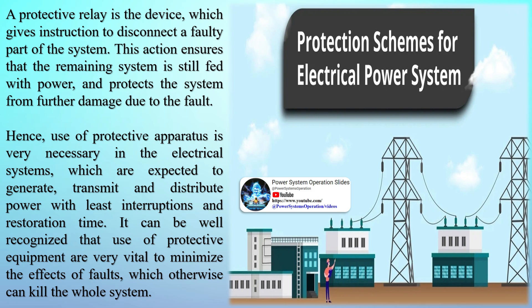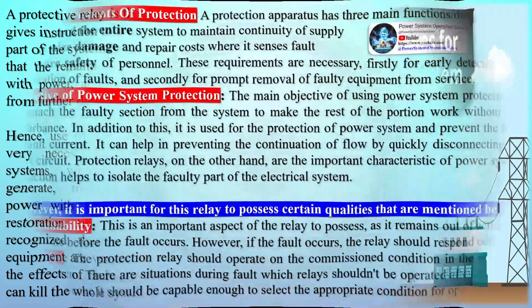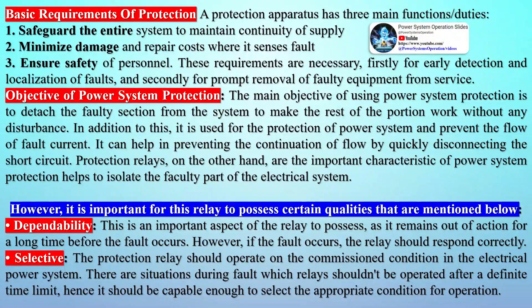It is important for the relay to possess certain qualities. Dependability is an important aspect: the relay remains out of action for a long time before a fault occurs, but when a fault does occur, the relay should respond correctly. Selectivity means the protection relay should operate on the commissioned condition in the electrical power system. There are situations during a fault when relays shouldn't operate after a definite time limit, so the relay should be capable of selecting the appropriate condition for operation.